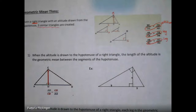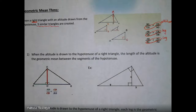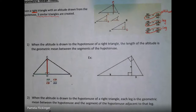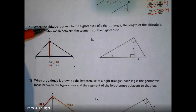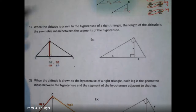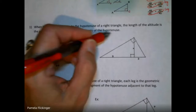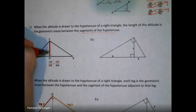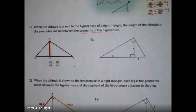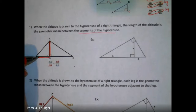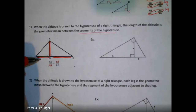These proportions help us create the two geometric mean theorems. The first one concerns the altitude: when the altitude is drawn to the hypotenuse of a right triangle, the length of that altitude is the geometric mean between the segments of the hypotenuse. So the altitude goes in the two diagonal spots, and the segments of the hypotenuse — AD and BD, the left segment and the right segment — go in the other spots.